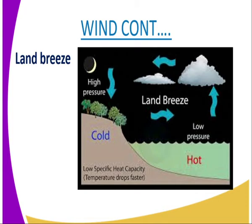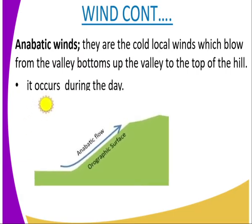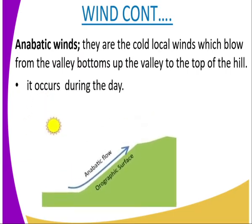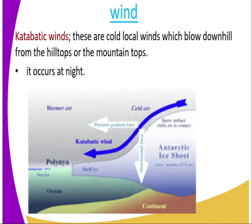The next type of wind is the anabatic wind. These are local winds which blow from the very bottom of a valley up to the top of the hill, and they occur during the day — they flow from the valley to the top. Then we have the katabatic winds, which are local winds that blow down from hilltops or mountain tops to the valley, and they occur at night. Anabatic winds take place during the day, while katabatic winds take place at night.